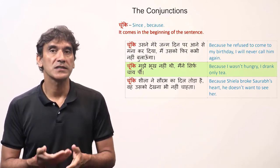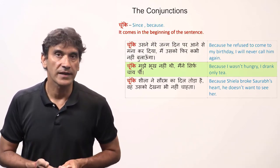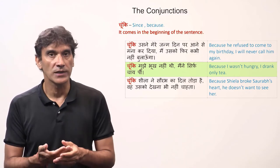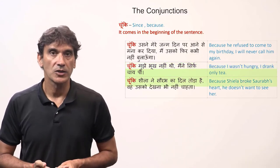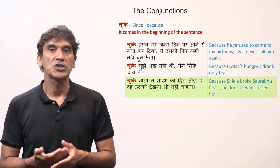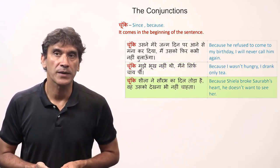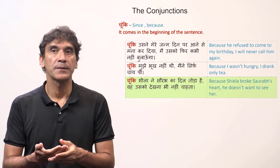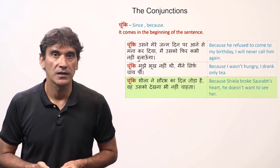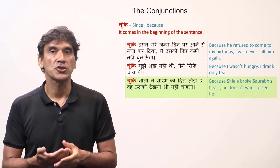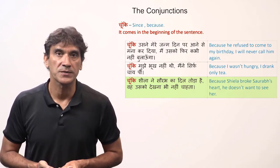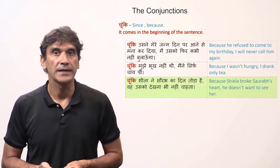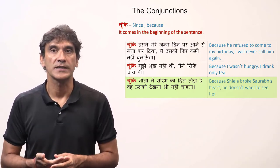More examples of 'choonki': because I wasn't hungry, I drank only tea. Because Sheila broke Sorab's heart, he doesn't want to see her.